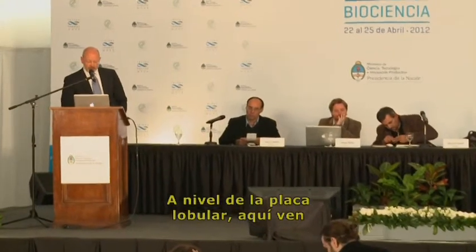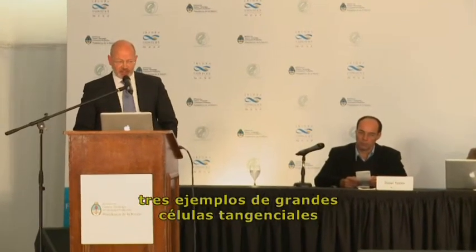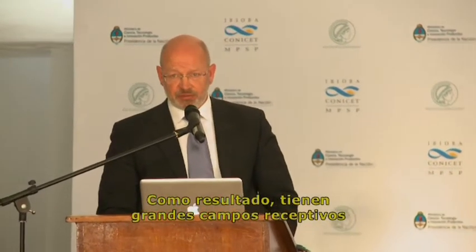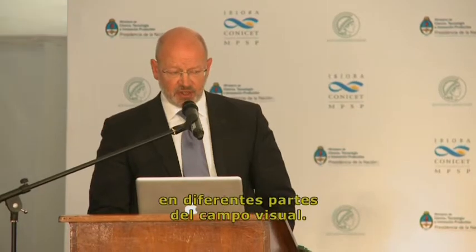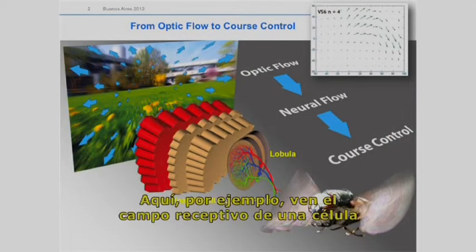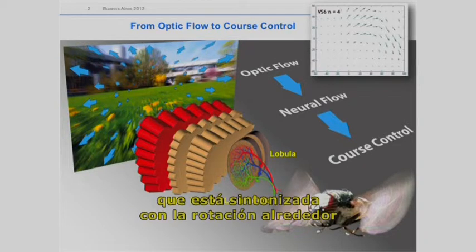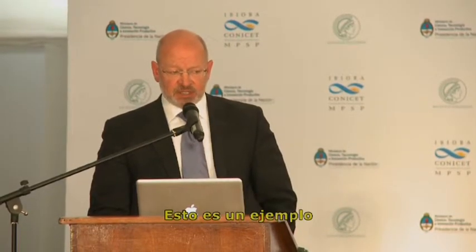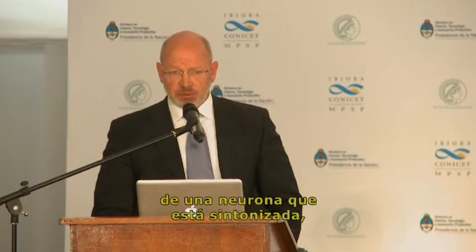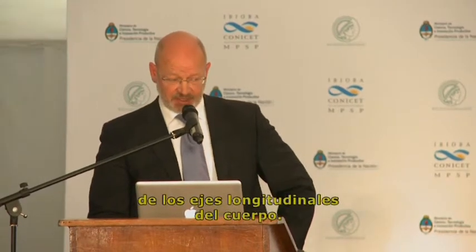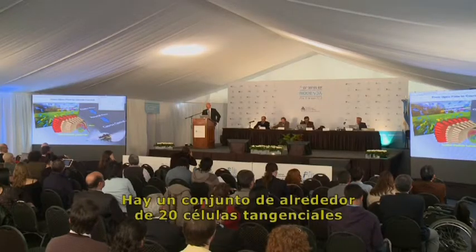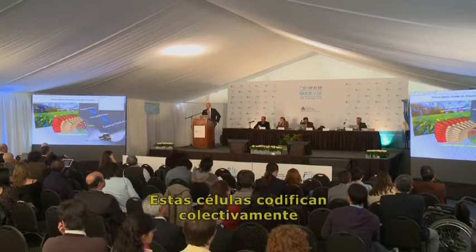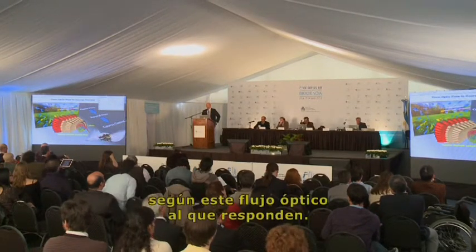At the level of the lobula plate, you see here three examples of large tangential cells which spatially integrate over these local motion detectors. As a result, they have large receptive fields and are directionally selective in different parts of the visual field. For example, one cell is tuned to rotation around the fly's vertical body axis, and another is tuned to rotation around the longitudinal body axis. There is a set of about 20 different tangential cells on each hemisphere, and collectively they encode the fly's ego motion based on the optic flow they respond to.